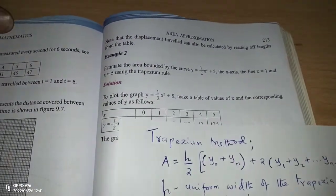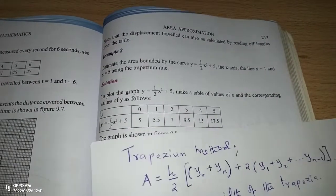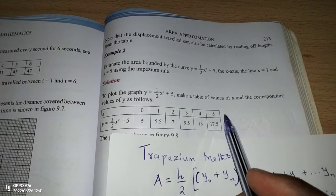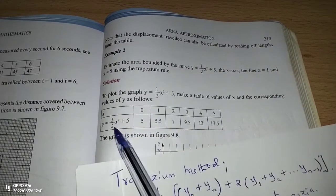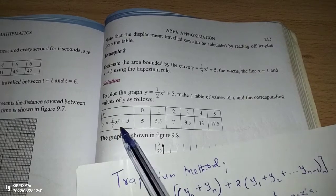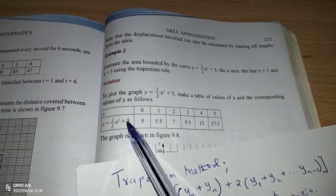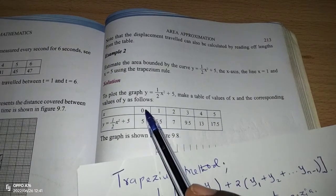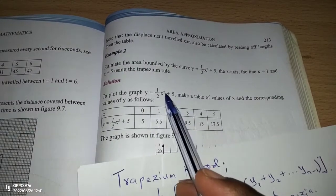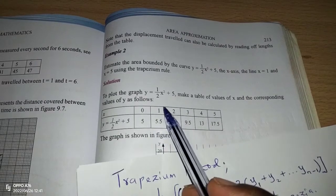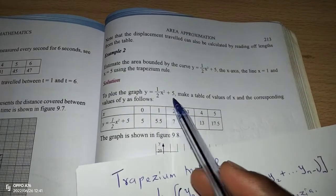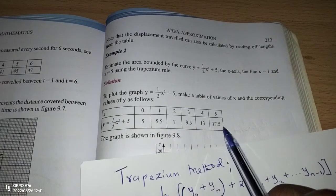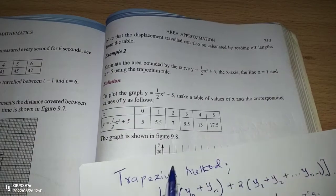So using the trapezoidal rule, we can first of all get values of x, just as it has been done here. We take from 0 up to 5 and substitute in the equation of the curve so that we may know the respective values of y for each given value of x. When x equals 0, the value of y is 5. When x is 1, y is 5.5, until the table is completely filled.